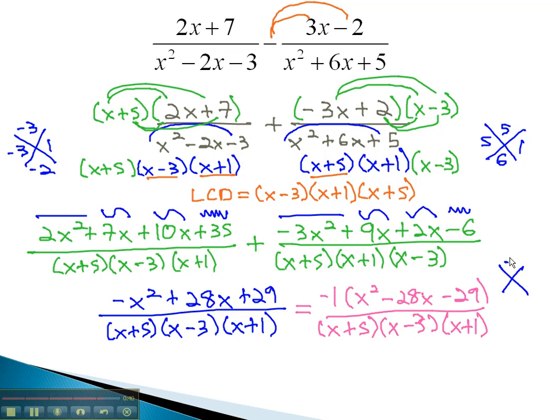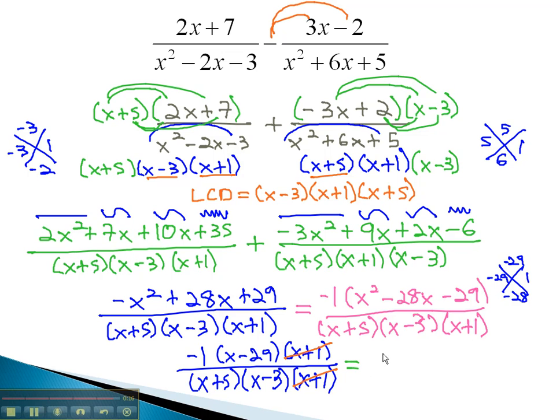Now, using the AC method, multiplying the negative 29, adding the negative 28, is negative 29 and 1. So, we have negative 1, times x minus 29, times x plus 1, over the common denominator, x plus 5, x minus 3, x plus 1. And sure enough, we can reduce out the x plus 1 to get our final answer, negative 1, times x minus 29, over x plus 5, times x minus 3. And we have subtracted the polynomials by first distributing the negative.